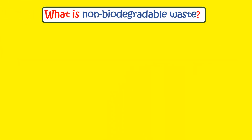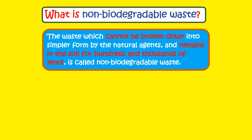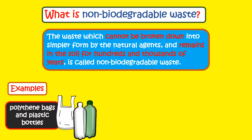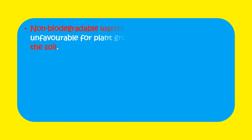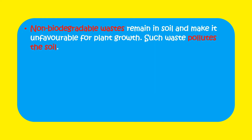What is non-biodegradable waste? The waste which cannot be broken down into simpler form by the natural agents, and remains in the soil for hundreds and thousands of years, is called non-biodegradable waste. Examples include plastic materials like polythene bags, plastic bottles, metal cans, and chemicals. Non-biodegradable wastes remain in the soil and make it unfavorable for plant growth. Such waste pollutes the soil.